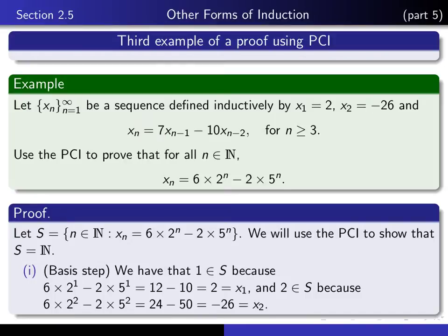Here's my proof of the basis step. As we've seen before, x_1 and x_2 are defined differently from the subsequent terms, so proving that 1 and 2 lie in S belongs in the basis step. We have to verify that x_1, which we know to be 2, is what you get if you plug n=1 into the closed-form formula, and that x_2, which is minus 26, is what you get if you replace n by 2. So I've verified that the formula gives 2 when n=1 and minus 26 when n=2. That verifies the basis step. Now put your video on pause again and see if you can write down the proof of the inductive step.